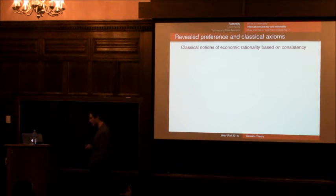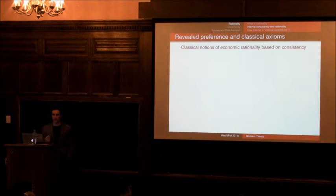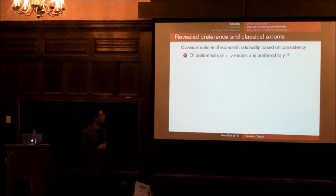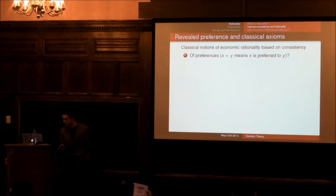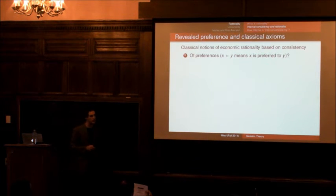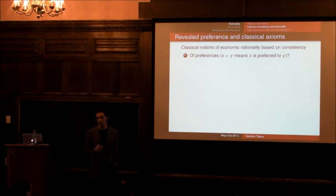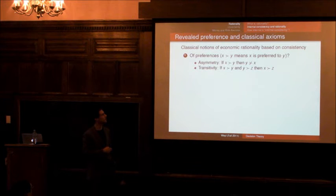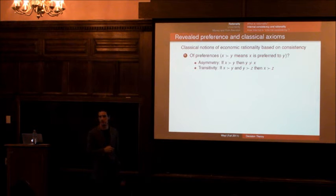So the classical notions of rationality are based on consistency. And I think that most of you will be pretty well acquainted with these, but let's just go back through them for a refresher. So I'm going to use strict preferences here. What does it mean for a strict preference denoted by x is strictly preferred to y to be consistent? Does anyone else want to say what it means for a preference ordering to be consistent? Or rational? Okay. Not for a strict preference ordering. For strict preference ordering, it's been asymmetric. If I prefer x over y, then I don't strictly prefer y over x. And transitive, if I prefer x to y and y to z, then I prefer x to z.